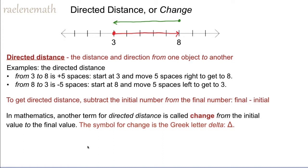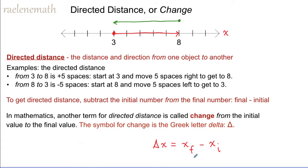In mathematics, we have another term for directed distance and it is called change. The symbol for change is the Greek letter delta. So if we want to calculate the change along an x-axis, we could say that the change in x is given by the final x coordinate minus the initial x coordinate. This gives us the change either from three to eight or from eight to three, depending on who is the initial and who is the final value.